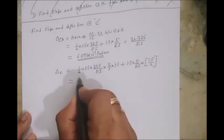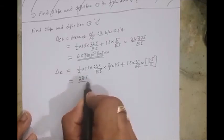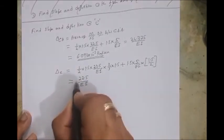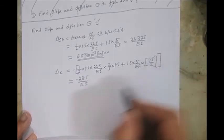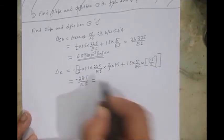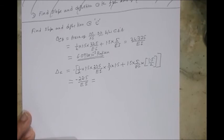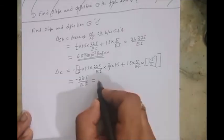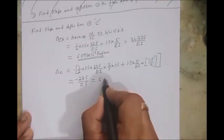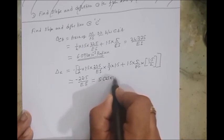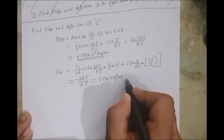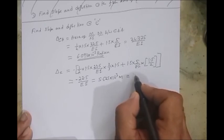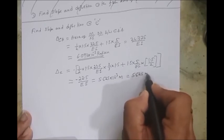Total answer for this one is 22.5 by EI. I'll give a negative sign minus since deflection is downward. The answer is 5.625 into 10 to the power minus 3 meter, which is equal to 5.625 mm.